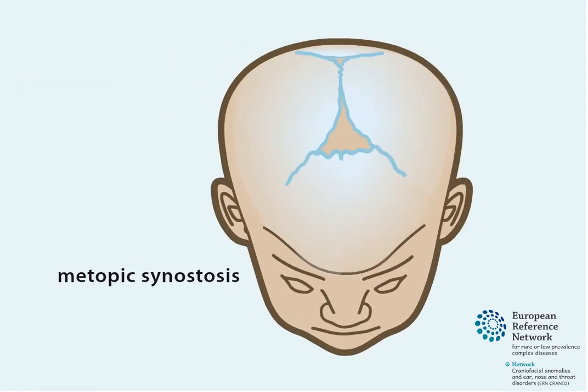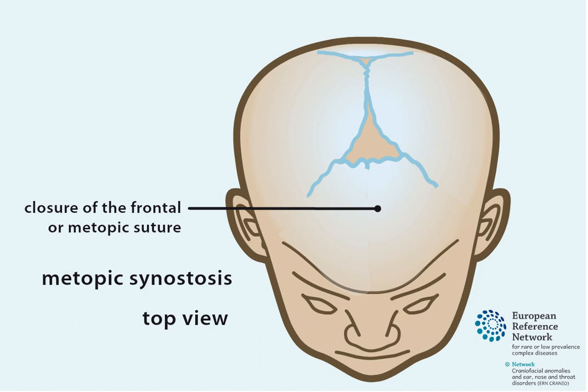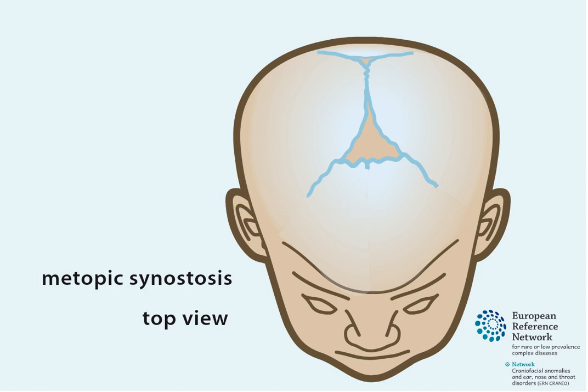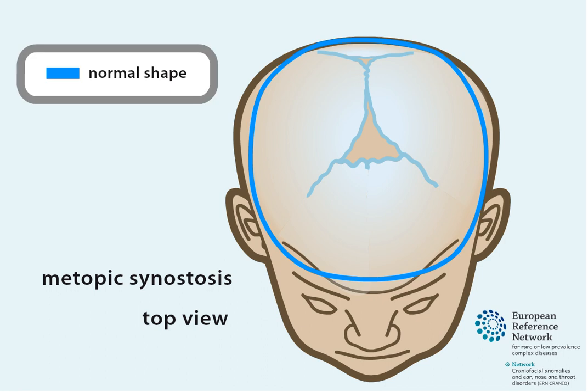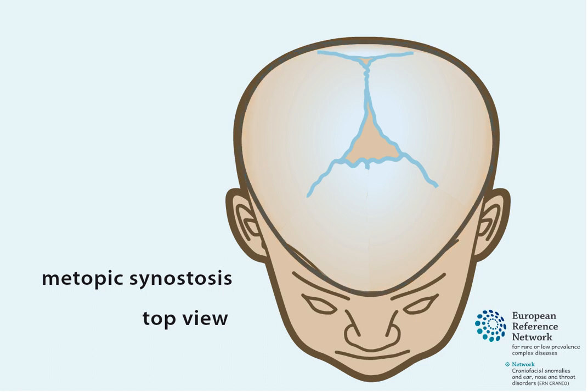Metopic synostosis. When the frontal suture, also known as the metopic suture, is prematurely closed, growth between the two forehead bone fragments is inhibited. As a result, the forehead becomes narrow and wedge-shaped, best seen from above. A prominent vertical ridge over the metopic suture is palpated in the midline.